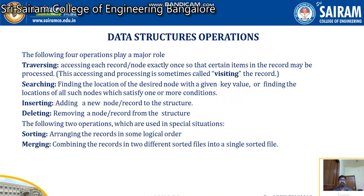Next is insertion — adding a node or record to a structure, which can be a linked list, array, tree, or graph. We add a new node to the given structure — this is called insertion. Deletion is the opposite: from a given structure you remove a node, record, or data item. These are the four core operations normally practiced in data structures.